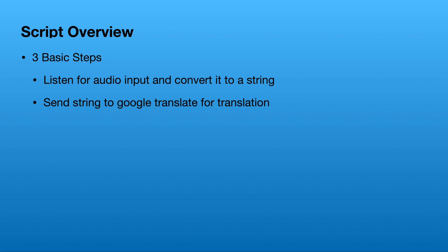Once that's done you should have new text in a different language, and then you do the third step which is to play this translated text as audio. So the full flow is: the Python script takes audio input from your microphone, changes it to text, sends that text to Google Translate, receives new text in a different language, then takes that text and plays it on your speaker.